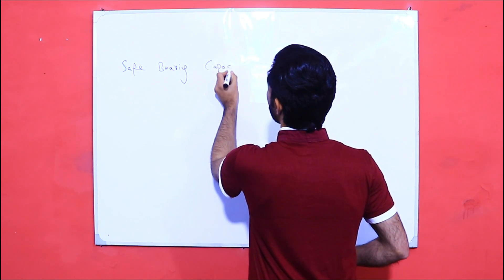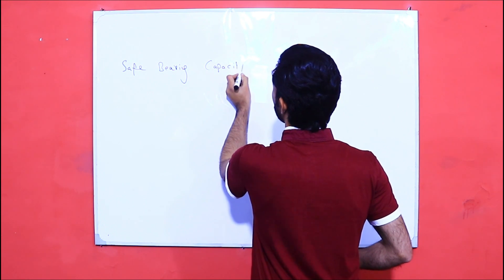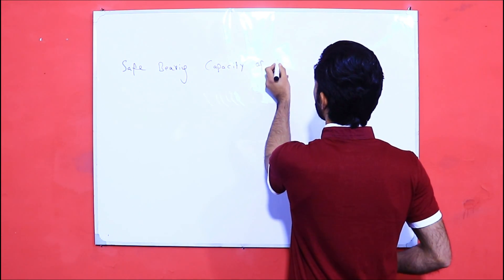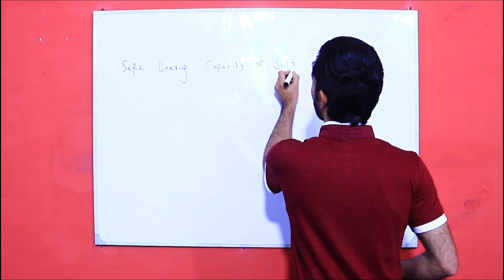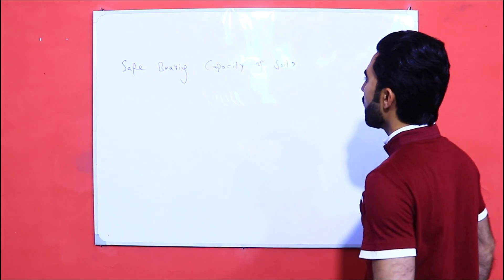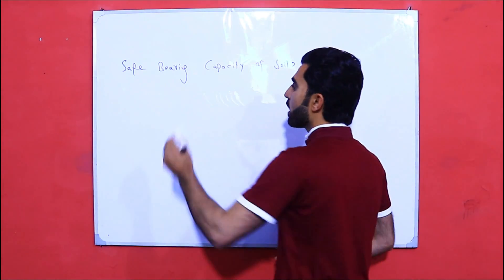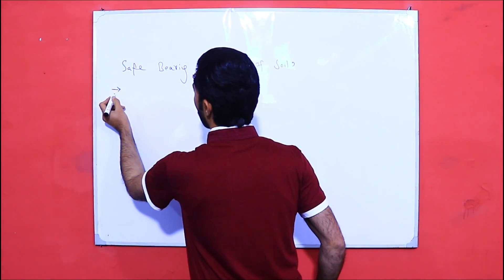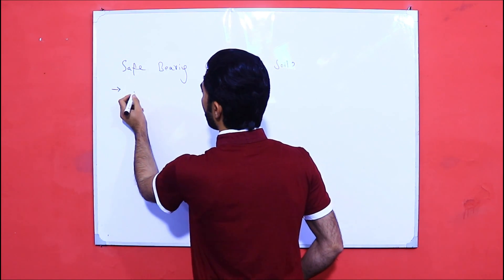What is Safe Bearing Capacity of soil? The simple definition of Safe Bearing Capacity of soil is: it is the capacity of soil which supports the structure load transferred to the soil without any shear failure or settlement.